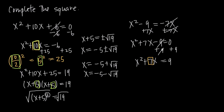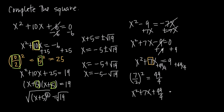Following the same process: take the coefficient on the first-degree x term, which is 7, divide by 2, and square the result. We can't reduce 7 over 2, so we square it to get 49 over 4. We add 49 over 4 to both sides, giving x squared plus 7x plus 49 over 4 on the left, and 9 plus 49 over 4 on the right. Foiling the left side back out confirms it equals x squared plus 7x plus 49 fourths.